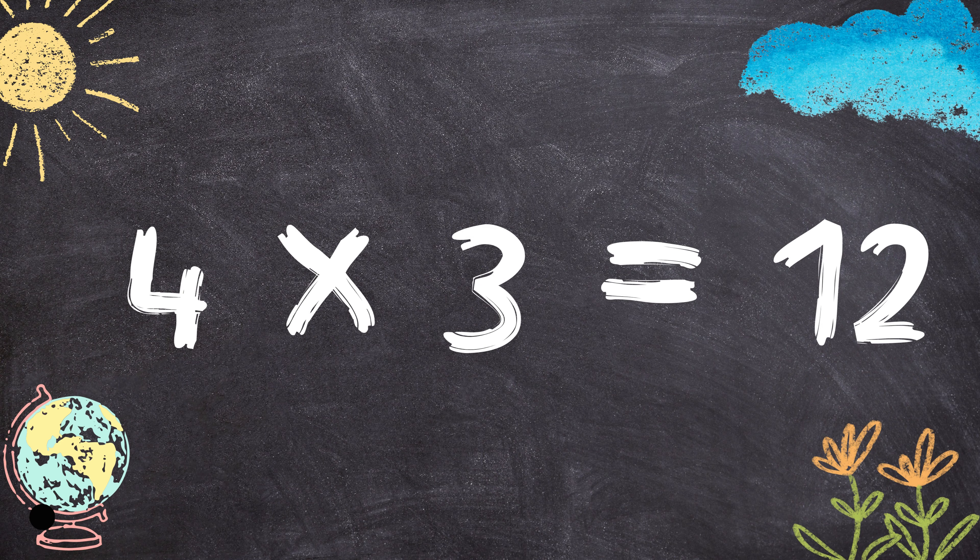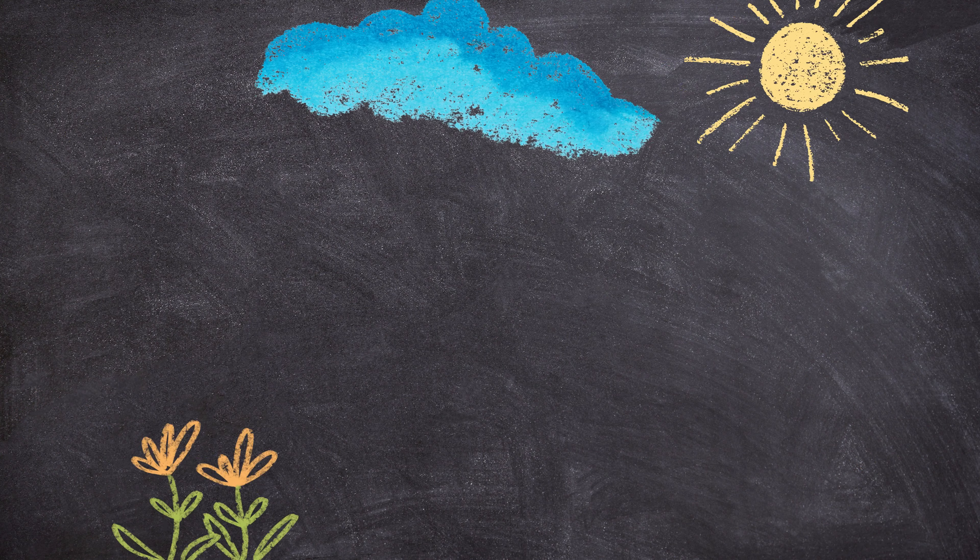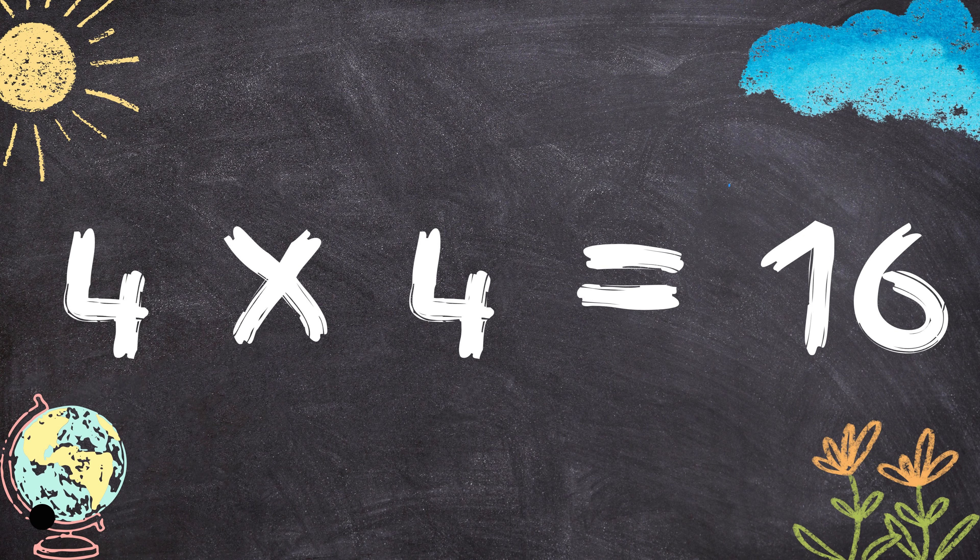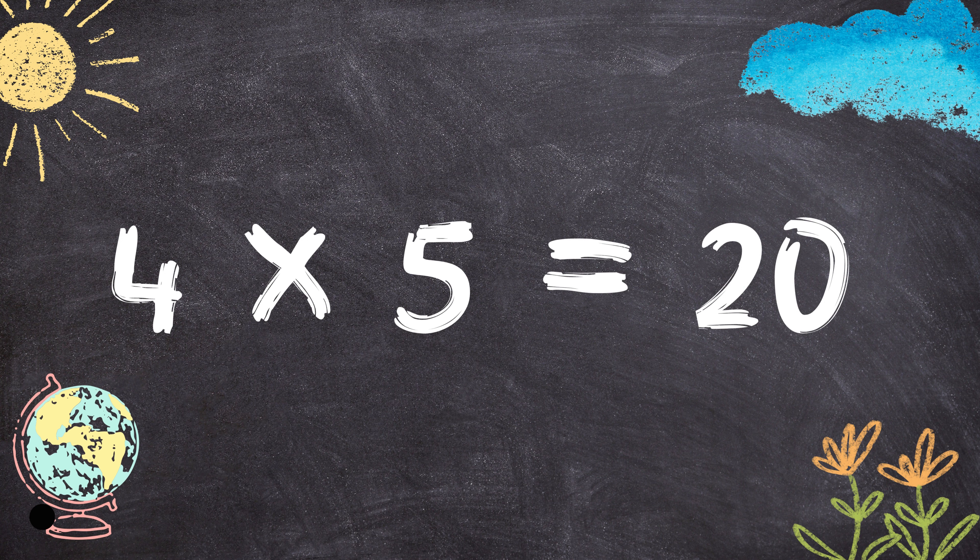4 times 3 equals 12. 4 multiplied by 4 equals 16. 4 times 5 equals 20.